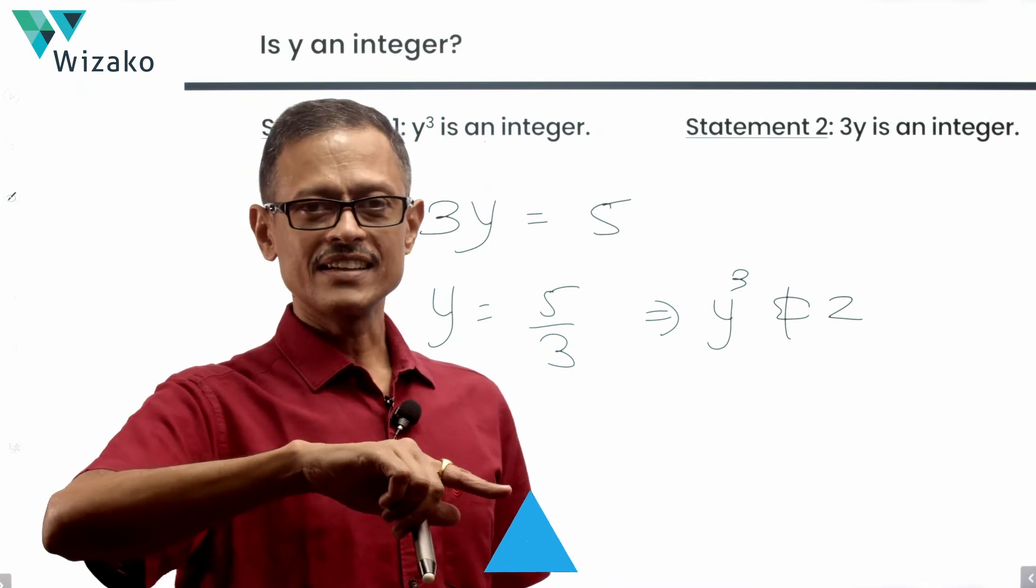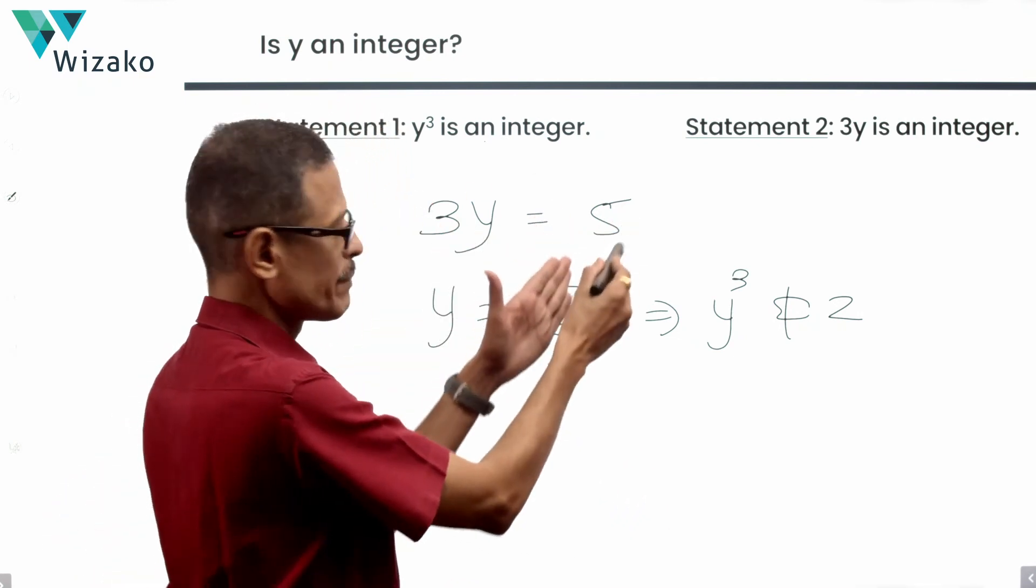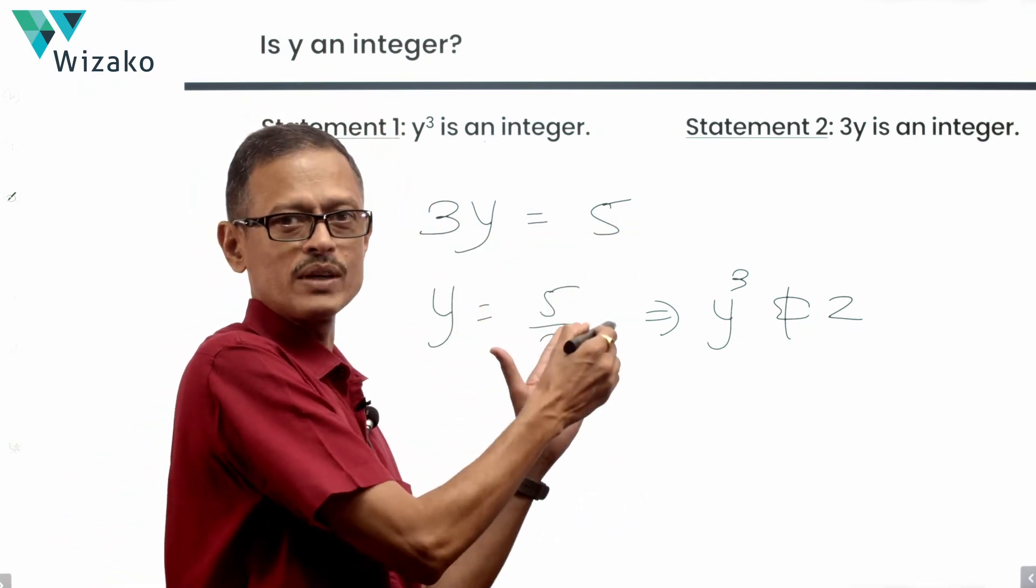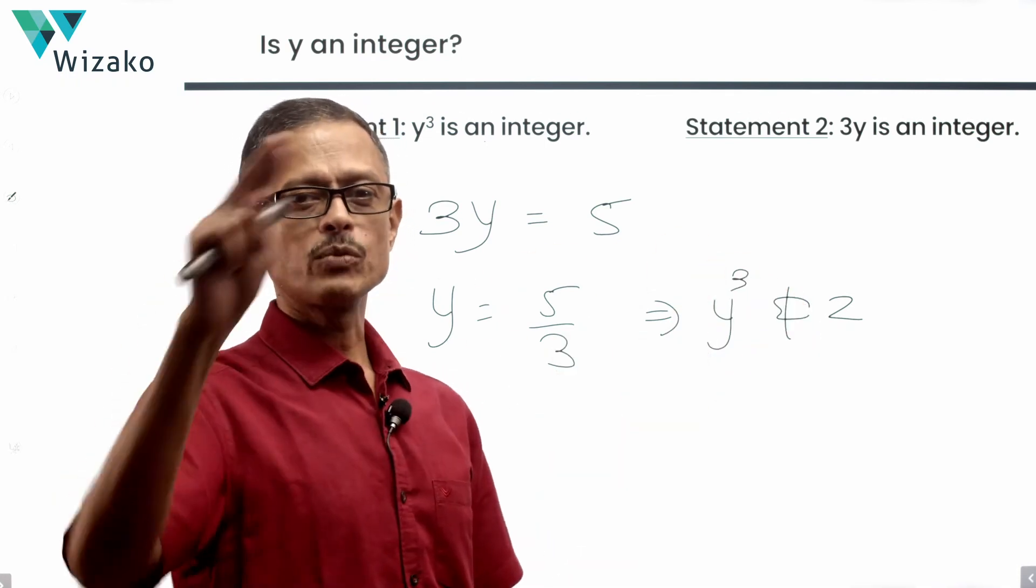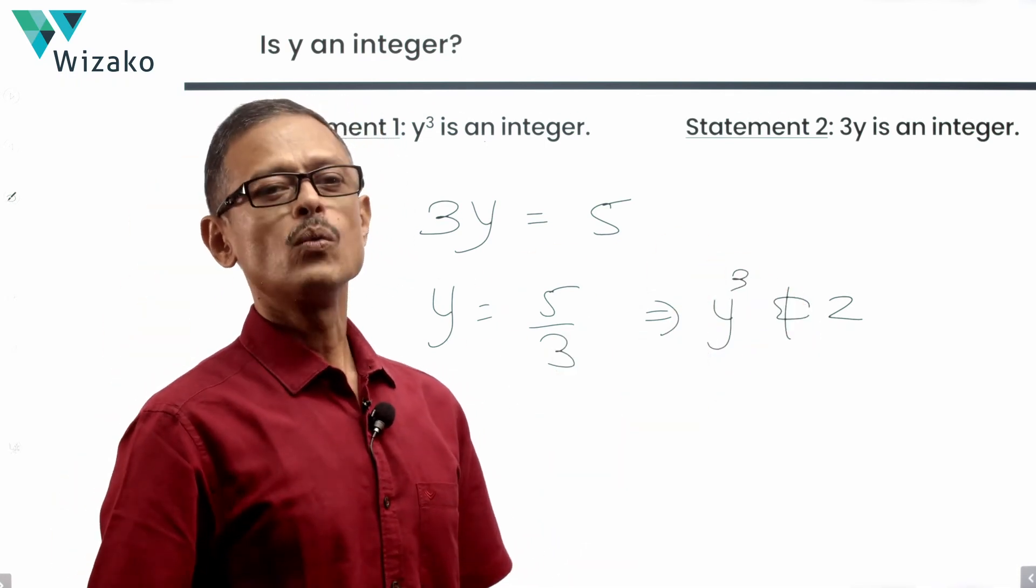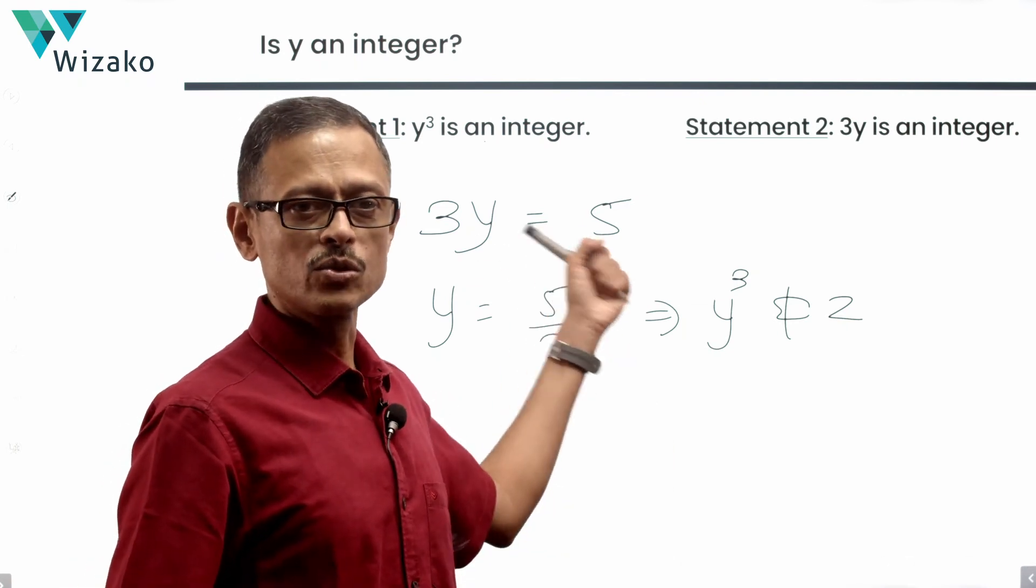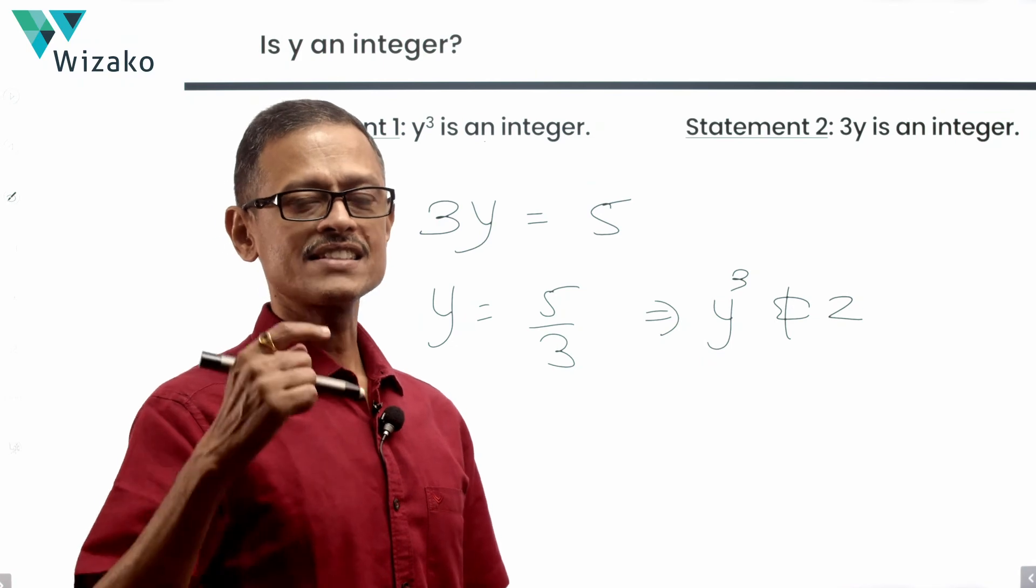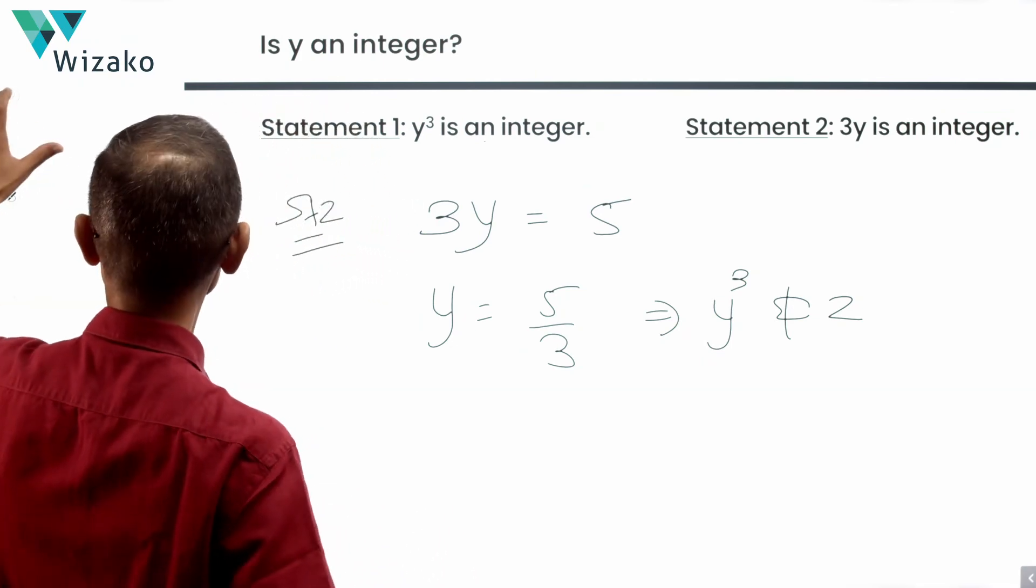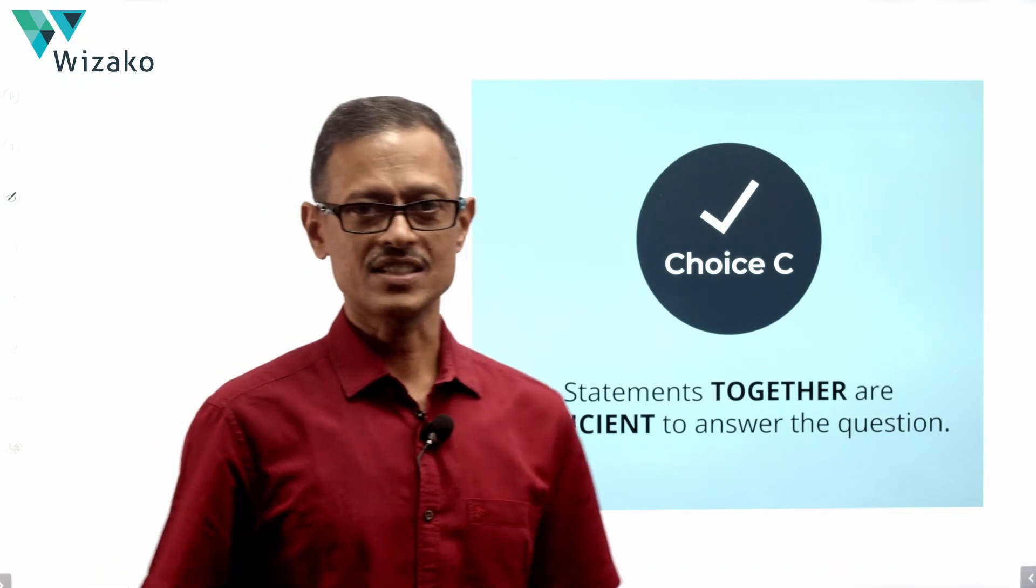So, if 3y is an integer, unless 3y becomes such a value that y is also an integer, y cube cannot simultaneously be an integer. So, 3y is an integer, y cube is an integer. It's possible only when y happens to be an integer. So, if the two statements hold good, then we can establish that y is an integer. The answer is a conclusive yes. Statements together have helped us arrive at the answer. Choice C is the correct answer to the question.